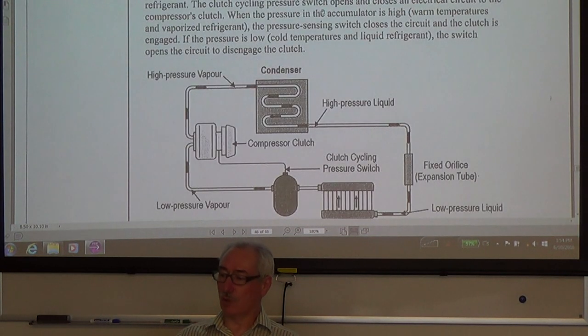The clutch cycling pressure switch opens and closes an electrical circuit to the compressor's clutch. If the pressure in the accumulator is high, so if we have warm temperatures and vaporized refrigerant, the pressure sensing switch closes the circuit and the clutch is engaged. If the pressure is low, that means we have cold temperatures and liquid refrigerant, the switch opens the circuit to disengage the clutch.